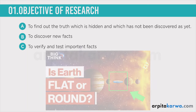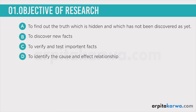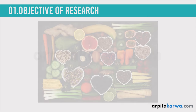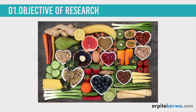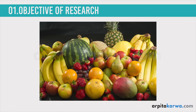The next important objective of research is to identify the cause and effect relationship. We look at variables and the main aim of choosing variables is to find the cause and effect relationship. For example, I am doing research to find out how nutrition affects sleep — giving some people junk food and others nutritious food before sleep, then observing their sleep patterns and whether they were restless or anxious.